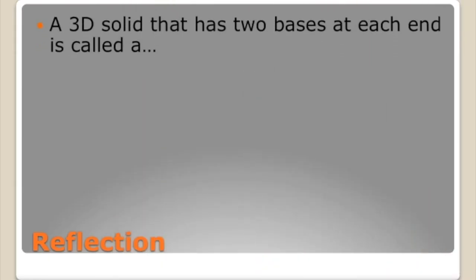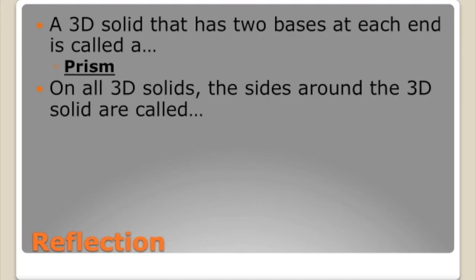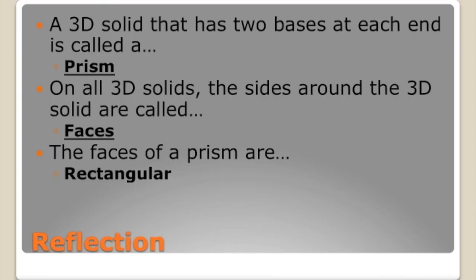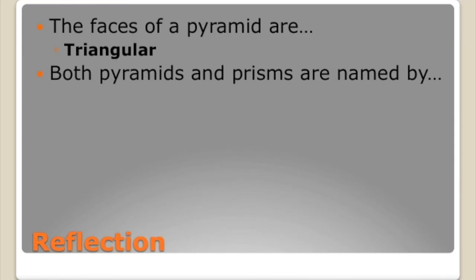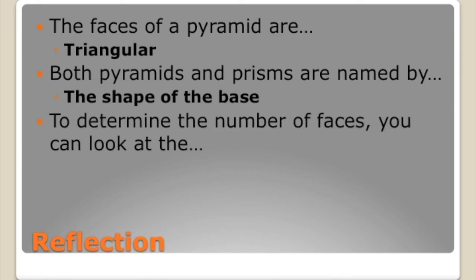A reflection: a 3D solid that has two bases at each end is called a prism. On all 3D solids, the sides around the solid are called faces. The faces of a prism are rectangular in shape, while the faces of a pyramid are triangular in shape. Both pyramids and prisms are named by looking at the base. And to determine the number of faces, you look at the base — if the base is a triangle with three sides, the solid has three faces; if the base is an octagon with eight sides, it has eight faces.